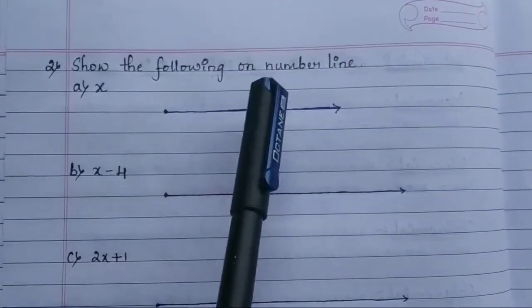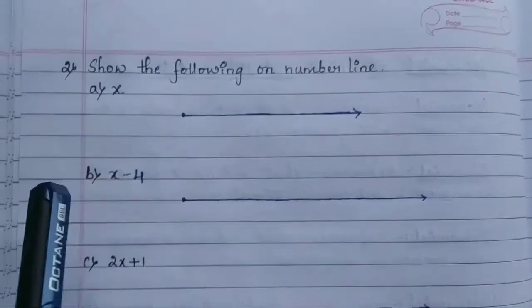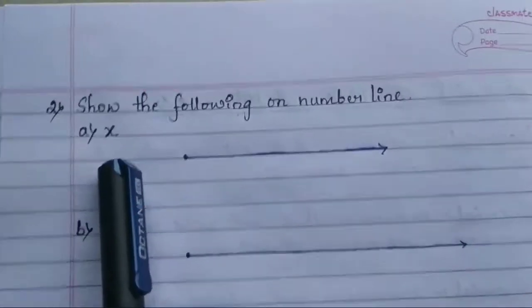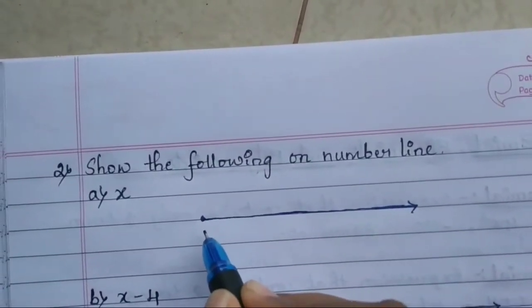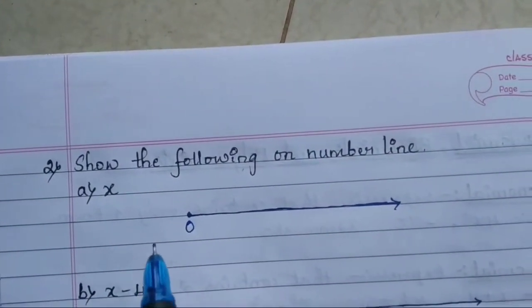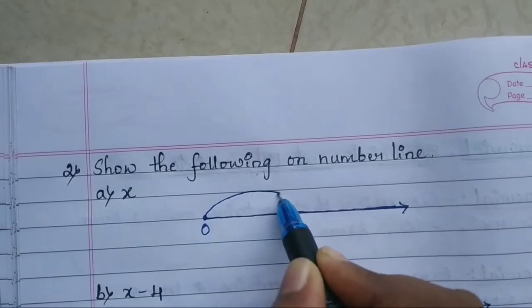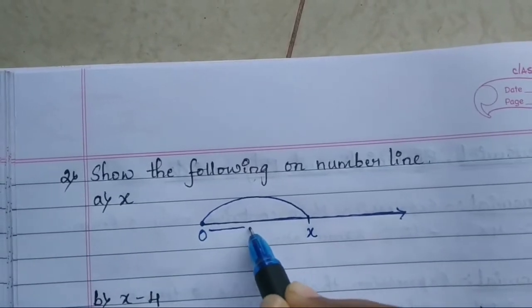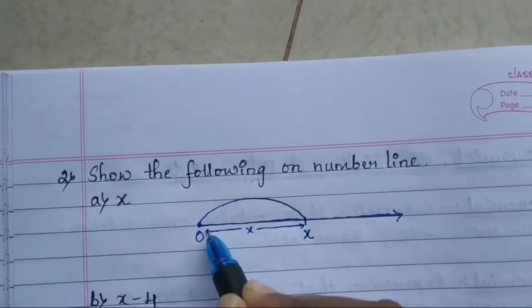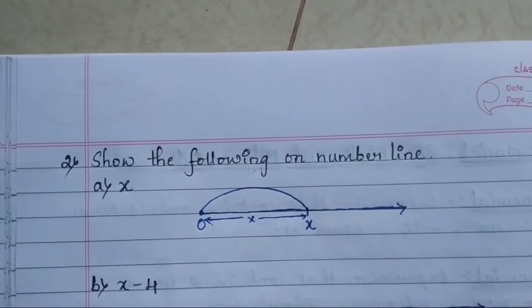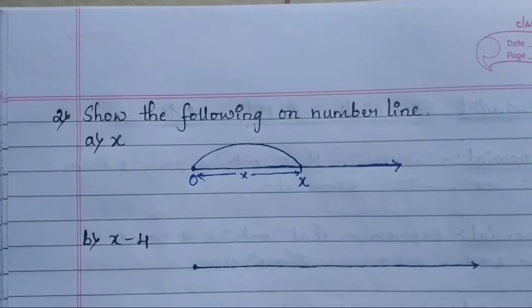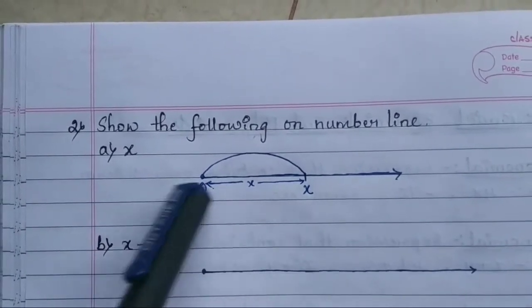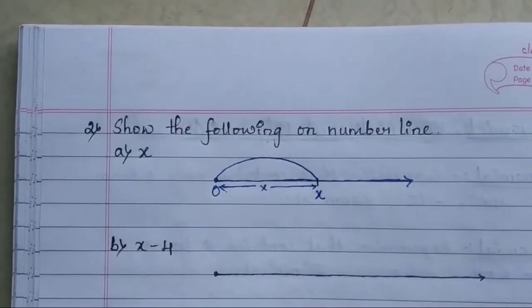The next question asks us to show the following on a number line. First, we show x: we take 0 as the starting point, then randomly mark a point for x. This distance from 0 is our x. We don't know the exact value — it can be positive or negative — so we just show it randomly on the number line.